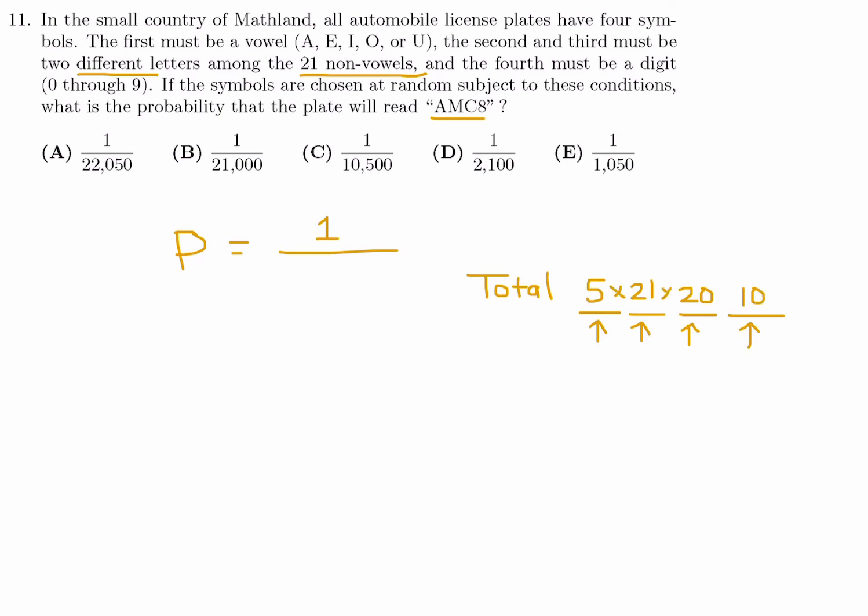And now we have to just multiply them. So 5 times 21 times 20 times 10 is 21,000, and that's what goes in the denominator here. And therefore, that's your probability. So number 11, the answer is B.